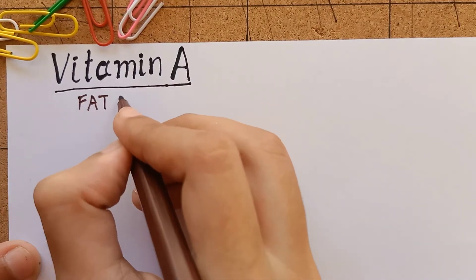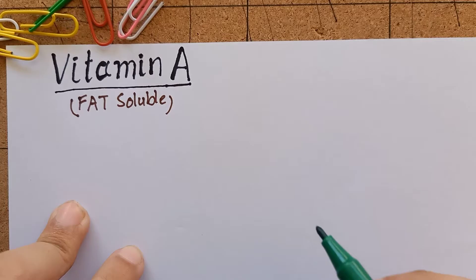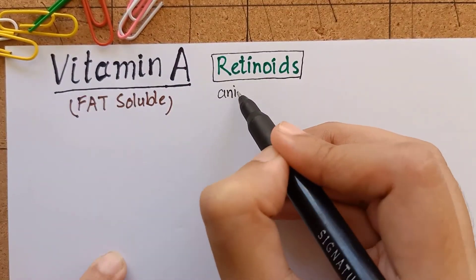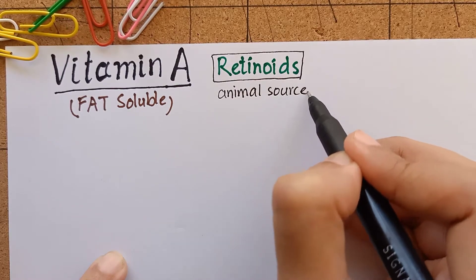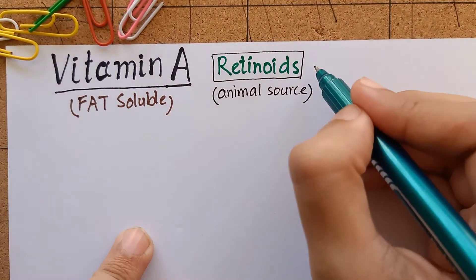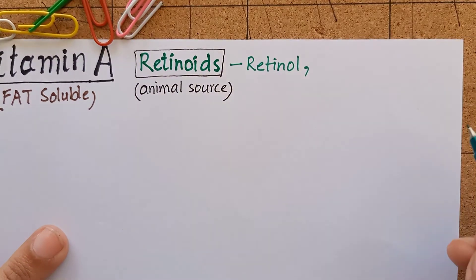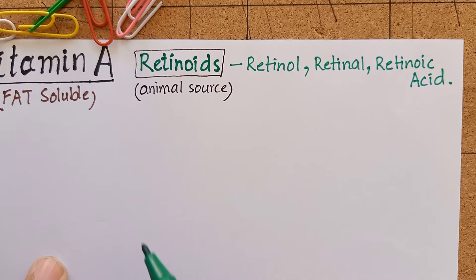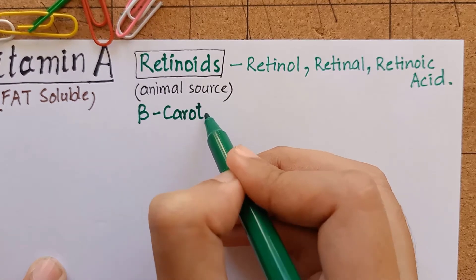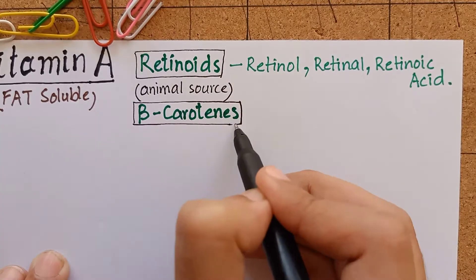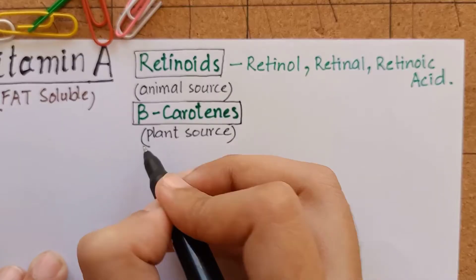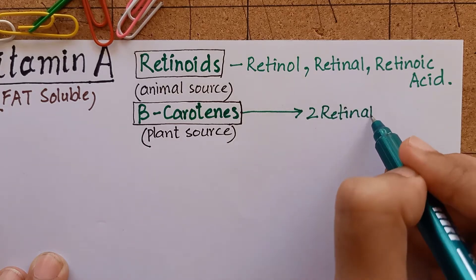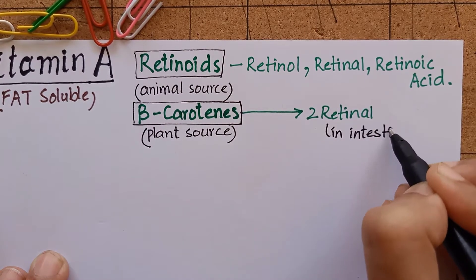Vitamin A is a fat soluble vitamin. The term retinoids is collectively used to represent natural forms of vitamin A that are obtained from animal sources. Retinoids can be retinol, retinal, or retinoic acid. Apart from these, there is an inactive form called beta carotene that is obtained from plant foods. Beta carotene gives rise to two molecules of retinol when it is broken down in our intestines.